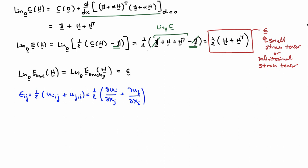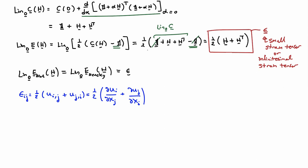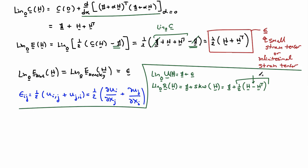In small deformation cases, there is only one strain tensor you ever have to worry about. We can also formally linearize all the other kinematic quantities. For instance, if we linearize the right stretch tensor U, we get identity plus epsilon. If we linearize the rotation R that comes out of the polar decomposition—which also depends on the displacement gradient—we get identity plus the skew part of H, where the skew part of H is one-half (H minus H-transpose).